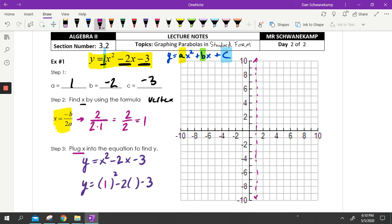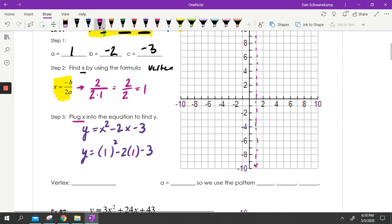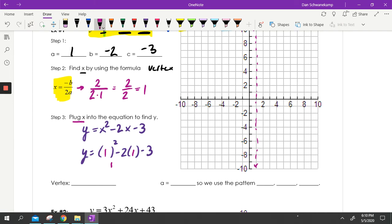So let's do that. 1 squared minus 2 times 1 minus 3. So 1 squared is 1, minus 2 is negative 2, minus 3. 1 minus 2 is negative 1, minus 3 more is negative 4. So what does that tell me? It tells me that my vertex is at 1, negative 4. Here is my X value, and when I take the X value and plug it back in, that gets me my Y value. So on my graph here, I'm going to go to 1, negative 4, and I'm going to put a dot.